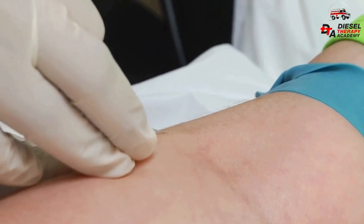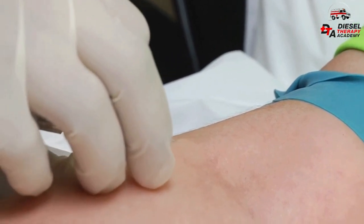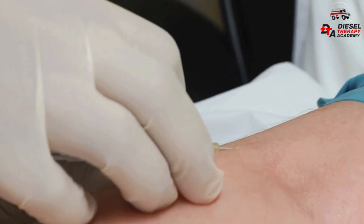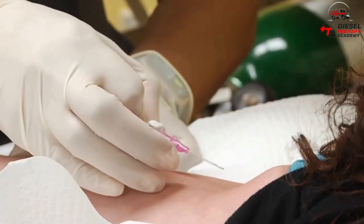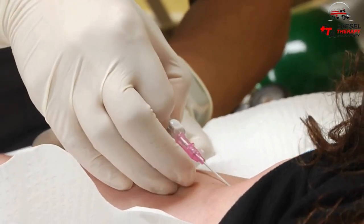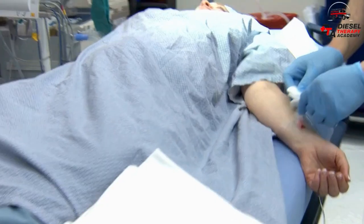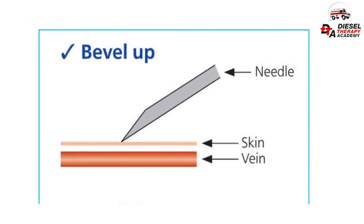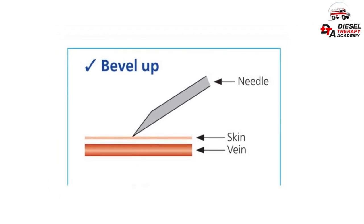Step 7: Insertion. First-stick success is always the goal, as any additional attempt increases pain and stress for the patient, adds workload to the caregiver, and costs to the healthcare system. Hold the patient's arm and place your thumb below the chosen puncture site to stabilize the vein. Ask the patient to make a fist to make the vein more visible. Inform the patient that they will feel a slight pinch. Insert the needle into the selected vein using a direct approach, entering the skin directly over the vein and puncturing at a 15 to 30 degree angle with the bevel facing upwards, waiting for blood to return into the clear cylindrical chamber.